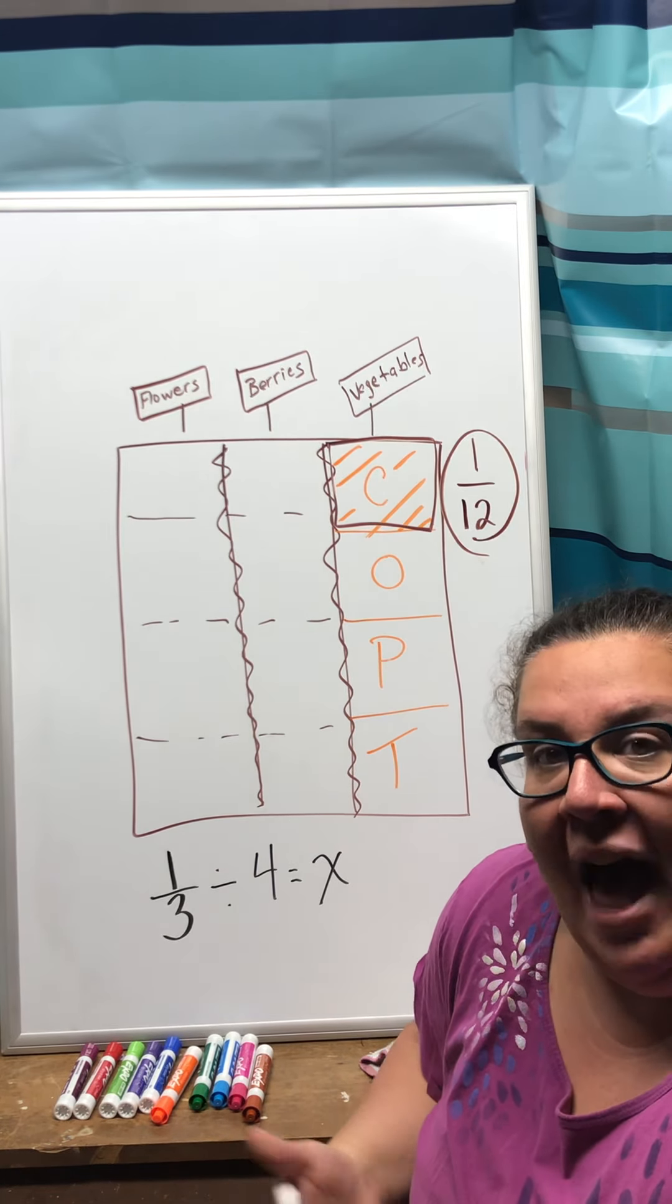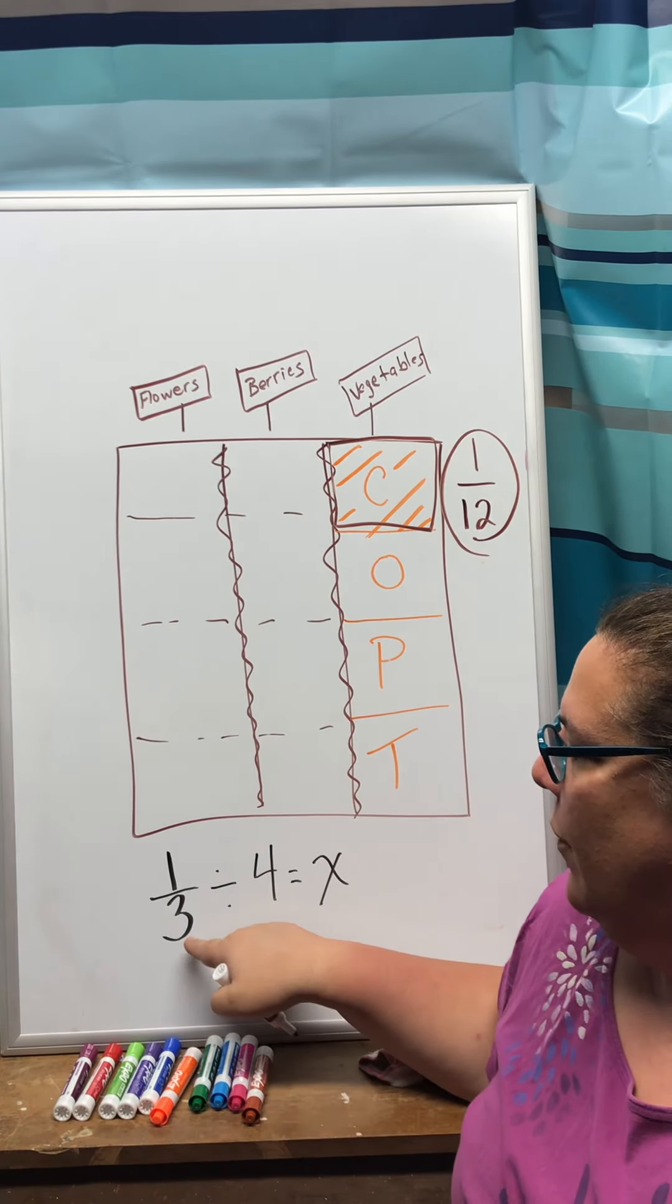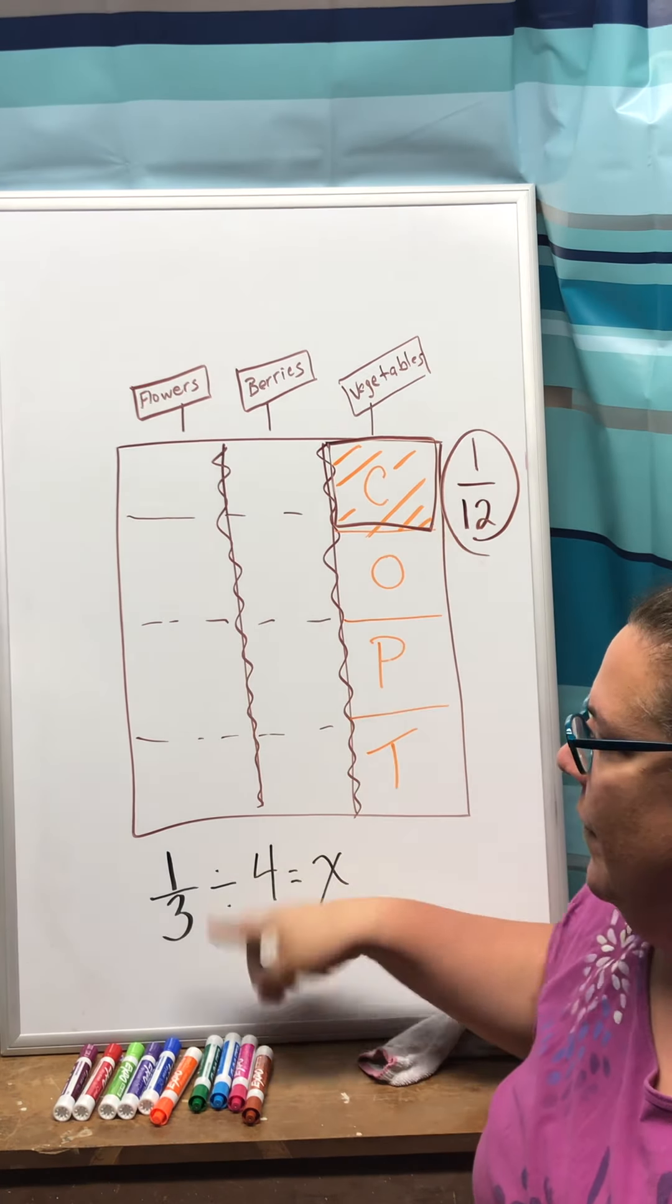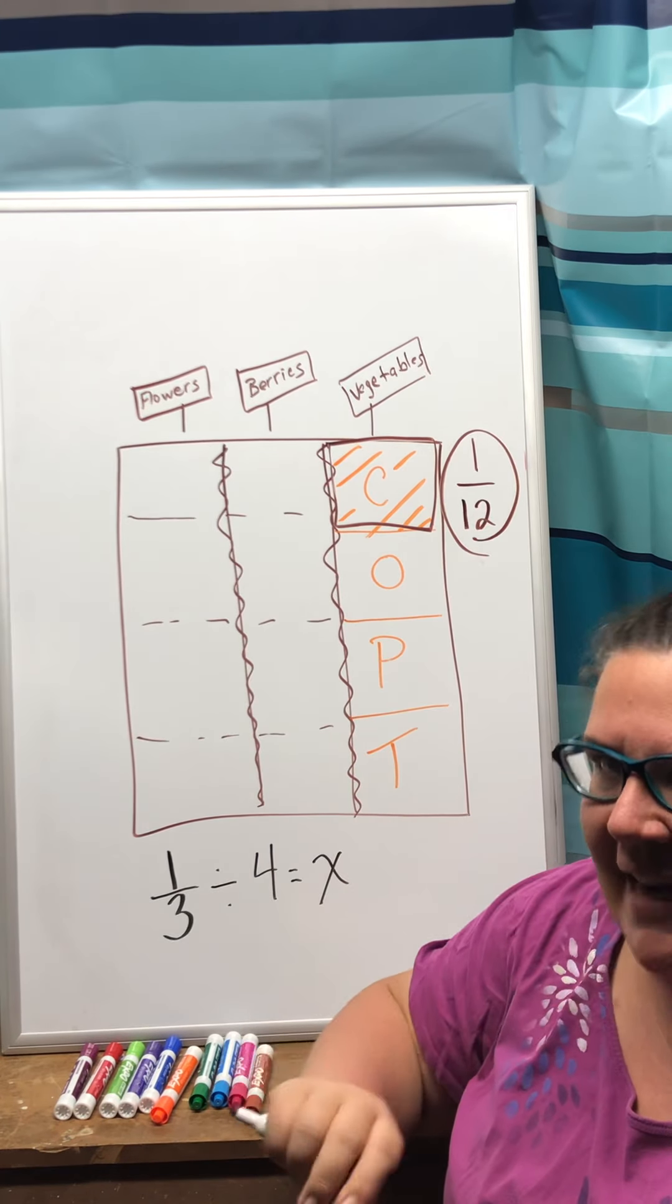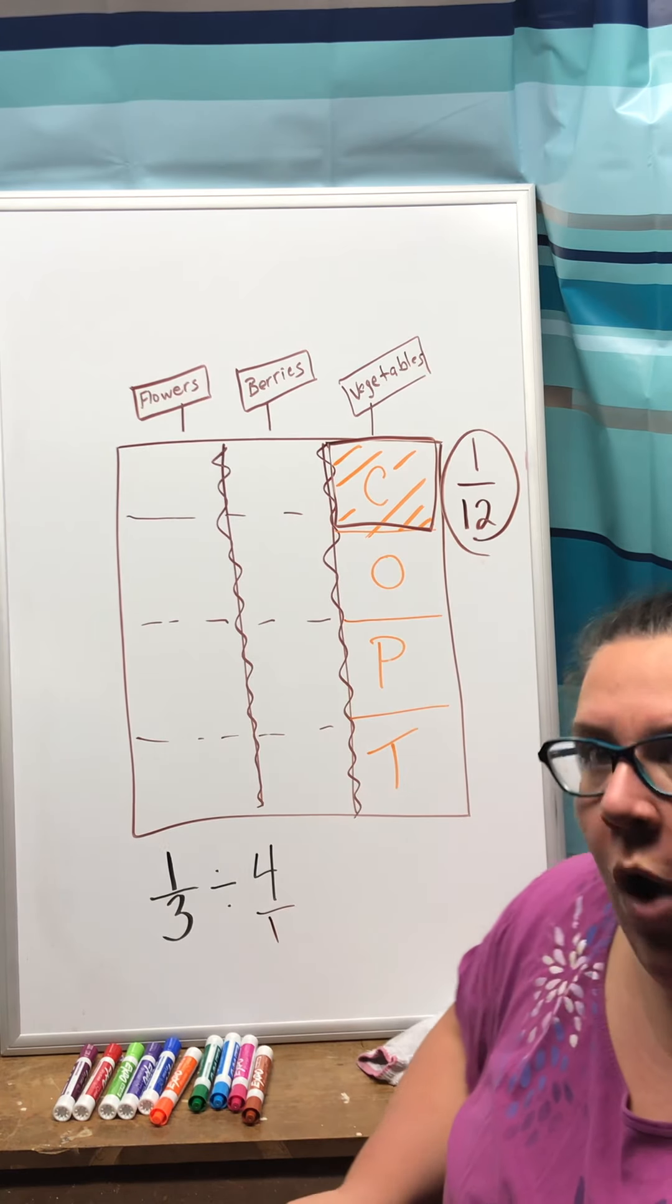Now why does that work in a number model or how does it work in a number model? Remember when I'm doing my division I'm starting with my 1/3, I cut it, I divide it into four parts and we're going to take that four, remember whole number four, I'm going to put a one underneath.